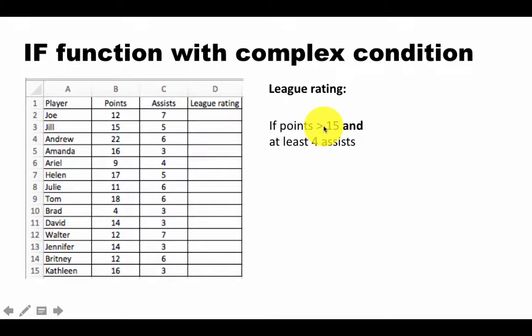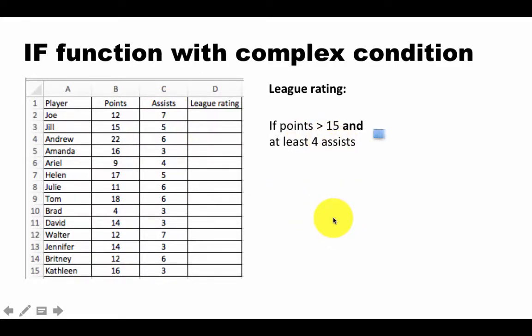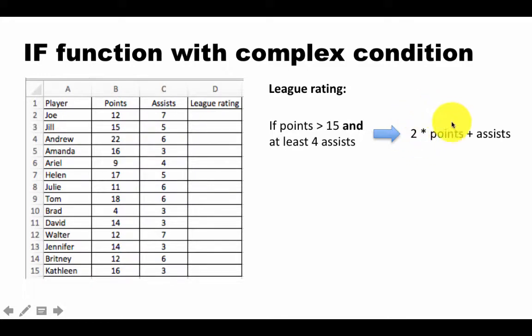The condition is: if the points are greater than 15 and the player had at least 4 assists. So it's based on both the points the player scored and the assists they participated in. If the points are greater than 15 and the player had at least 4 assists, then the rating is computed as 2 times points plus assists — just points are multiplied by 2. Otherwise the rating is simply points plus assists. There is no logical rationale for this; I just made it up to illustrate an IF function with a complex condition.